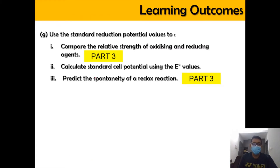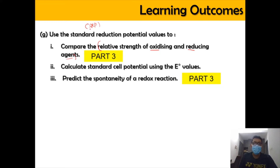In this video, we're going to use the standard reduction potential, SRP, as learned from the table list, in order to compare and contrast the relative strength of the oxidizing and the reducing agent. We're also going to use the SRP value to calculate the E0 cell, where E0 cell equals delta E0 cathode minus delta E0 anode.